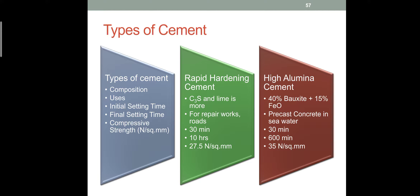High alumina cement is mainly used where erosion and corrosion are expected — for example, in sea water where salt content is more. The initial setting time is 30 minutes and final setting time is 600 minutes, which is 10 hours. Strength is more than rapid hardening cement, at almost 35 N/mm².